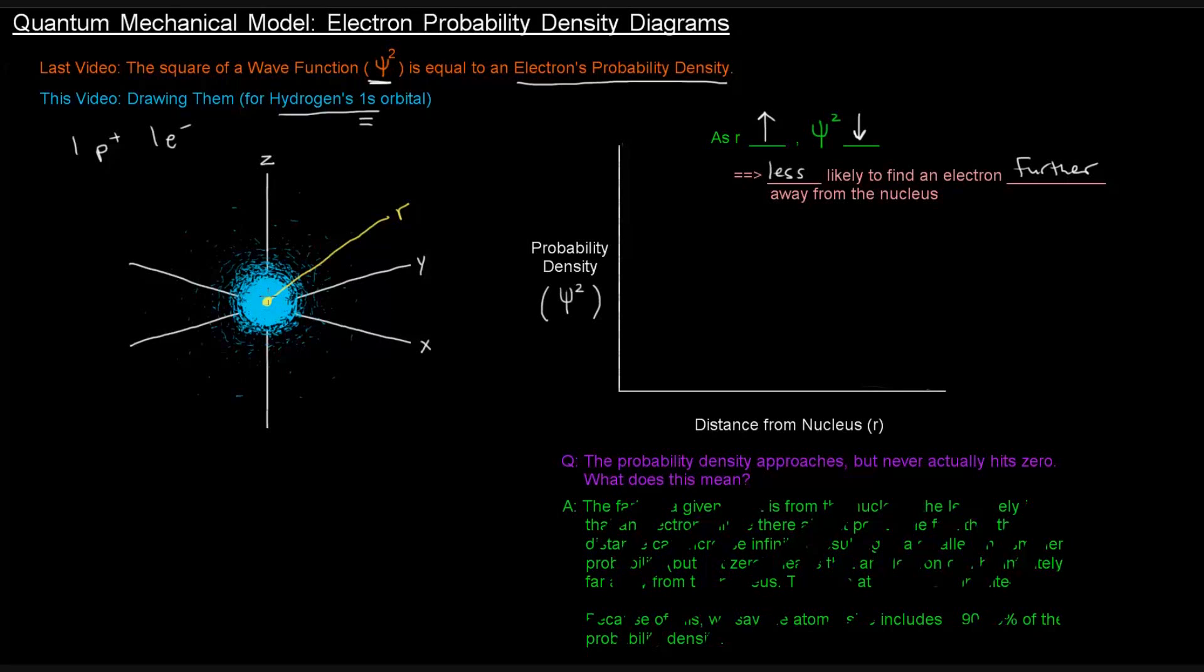So the probability density here, if we graph the probability density versus the distance from the nucleus, looks like this. So what does this mean? Well, at really tiny distances away from the nucleus, the probability density is really high. We've got tons of likelihood that an electron would be super close to the nucleus. But as you move further and further away, as the r value gets bigger, the probability density decreases.